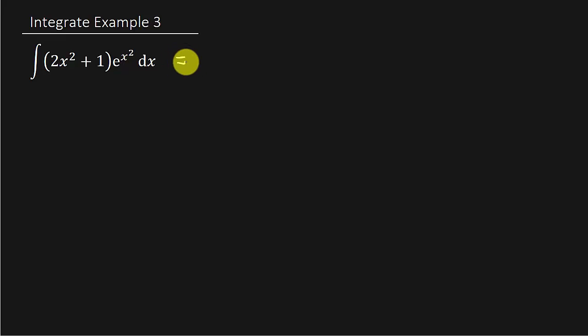The first thing we want to do is distribute this e to the x squared. So that's going to give me the integral 2x squared e to the x squared plus e to the x squared dx.